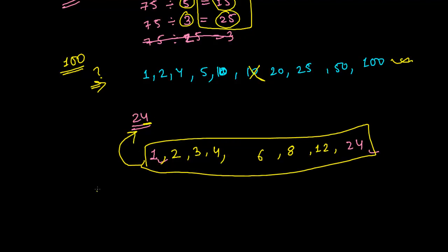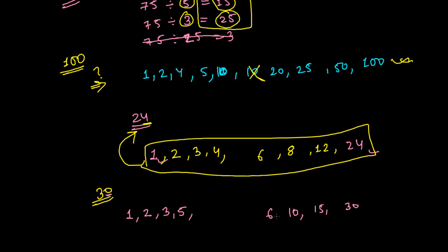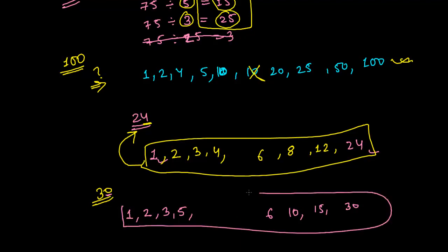Now if I give you 30, how will you write its factors? Definitely 1 divides 30 in 30 times. Since it ends in 0, it is divisible by 2 — giving 15 times. 3 can divide 30 in 10 times. 5 can divide 30 in 6 times. Writing 6 would repeat, so stop there. The factors of 30 are 1, 2, 3, 5, 6, 10, 15, and 30.